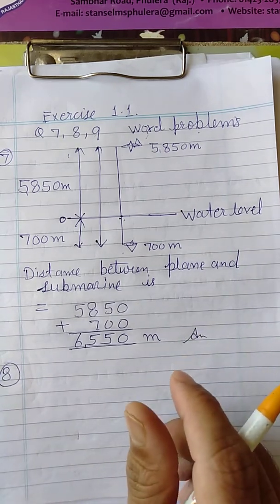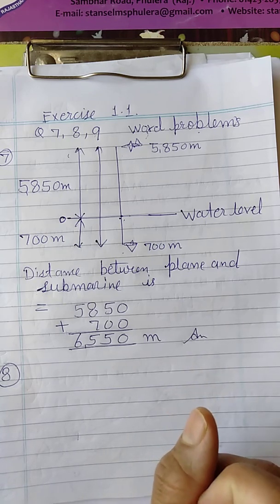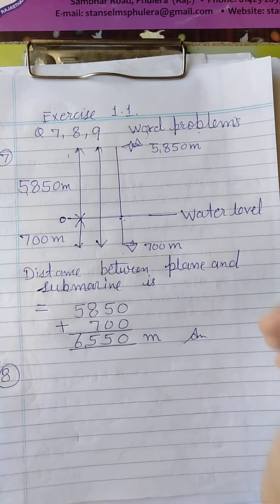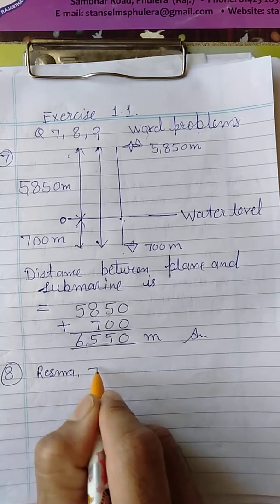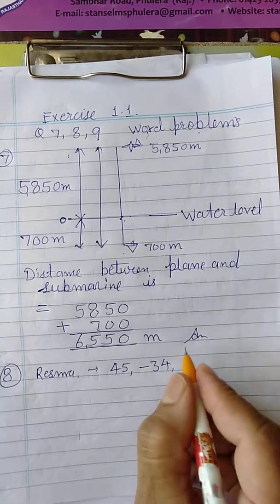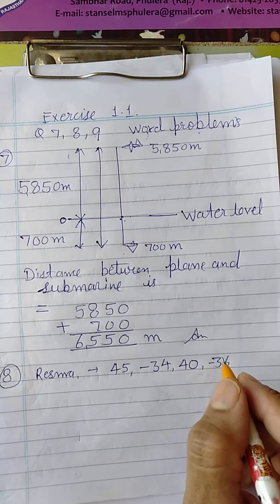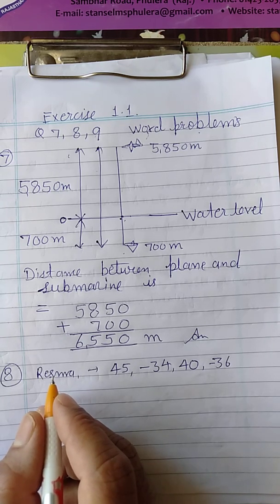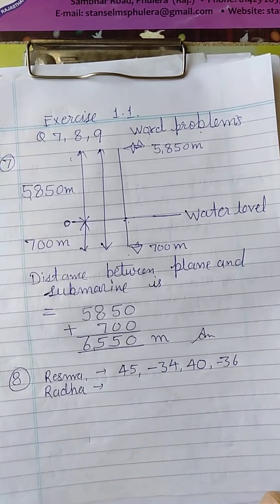Number eight. In a quiz, two positive marks are allotted for each correct answer and minus one for each incorrect answer. In four round quiz, Reshma's scores are given. Reshma scored in four rounds: 45 marks in first round, minus 34 in second round, 40 marks in third round, and minus 36 in fourth round. Similarly, second one is Radha.